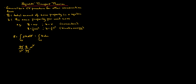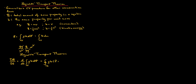The Reynolds Transport Theorem states that the time rate of change of property B equals the time rate of change of that same property per unit mass integrated over the control volume, plus the surface integral of the density multiplied by the property b per unit mass multiplied by V·n dS.